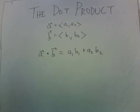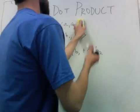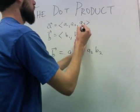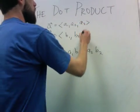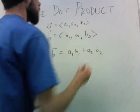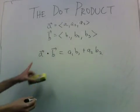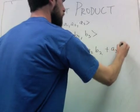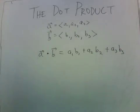If we have three-dimensional vectors, it works in a similar way. If we have a1, a2, a3 and b1, b2, b3, then a dot b is just a1*b1 + a2*b2 + a3*b3. So that's not a big deal.